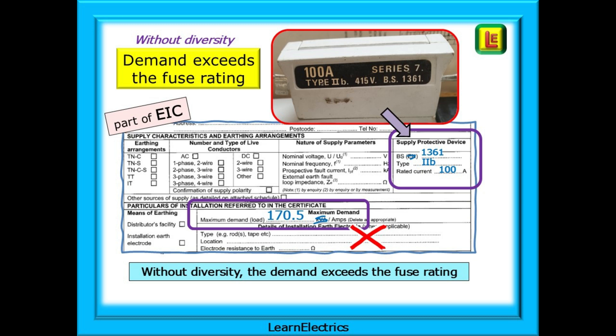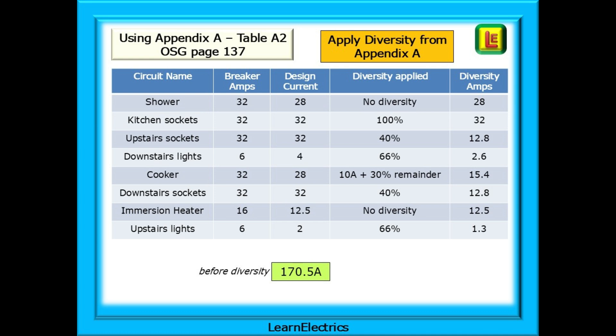Remember IB, IN, IZ — we will leave a link to a video on this in the description. If we apply diversity by using Appendix A, what new figure do we get? Using Table A2 on page 137, we see that each circuit type has a recommended diversity calculation. We apply these in turn, and for some circuits there is no diversity permitted — we use the full design current. For the socket circuits, in theory it's possible to load the circuit to the full 32 amps, just by plugging appliances into it. So we use 32 amps as the design current for the socket circuit.